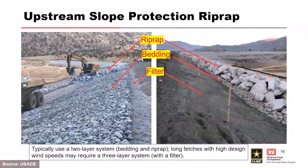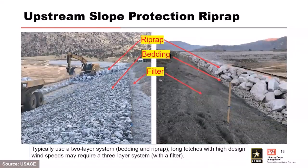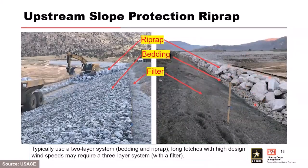I mentioned a three-filter system and wanted to show a photo from Lake Isabella Dam. You can see the riprap here — all sized based on velocity, wind speed, duration, and fetch. That's some pretty large rock. The bedding material was filter compatible with that, and then another filter was added on the downstream side because it had to be compatible with the material directly underneath.